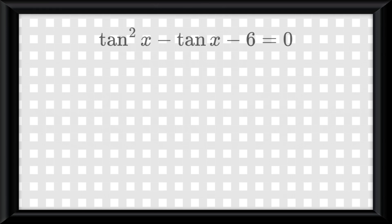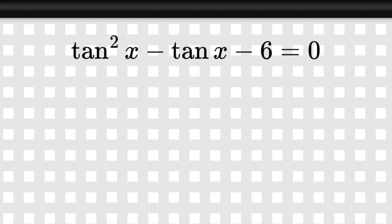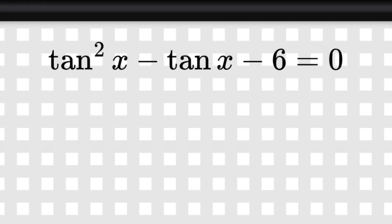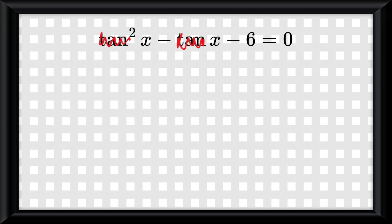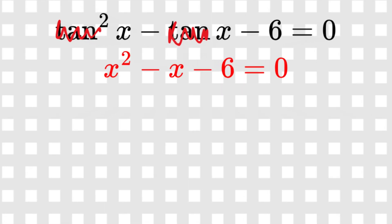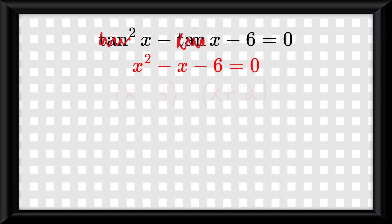Let's try this problem, it's a calculator problem: tangent squared of x minus tangent of x minus 6 is equal to 0. Let's remove the tangent making it x squared minus x minus 6 equals 0. Factoring it, we get x minus 3 and x plus 2. So we get x equals 3 and x equals negative 2.